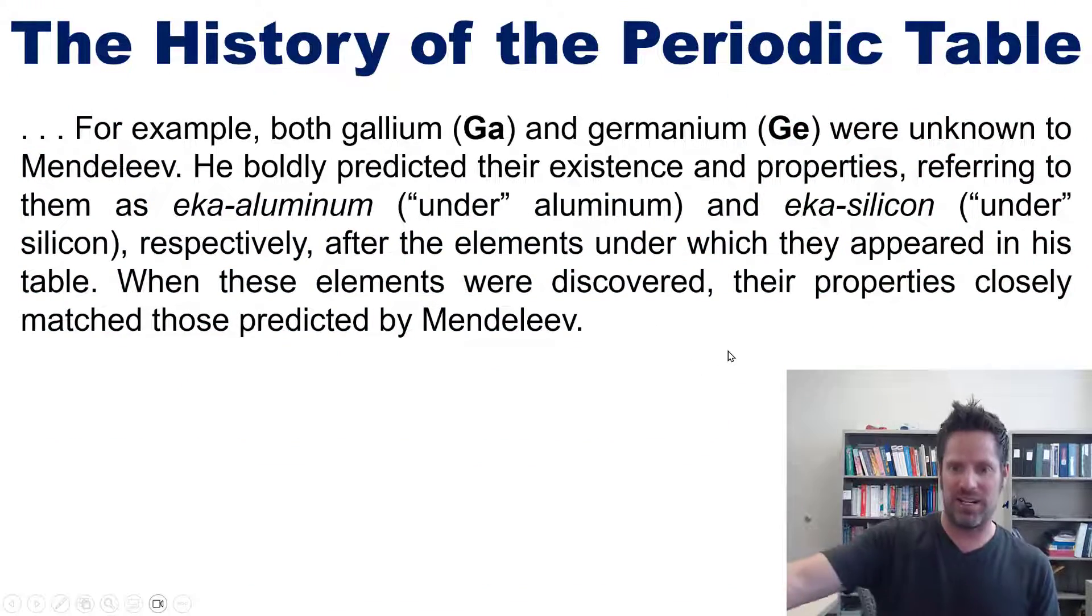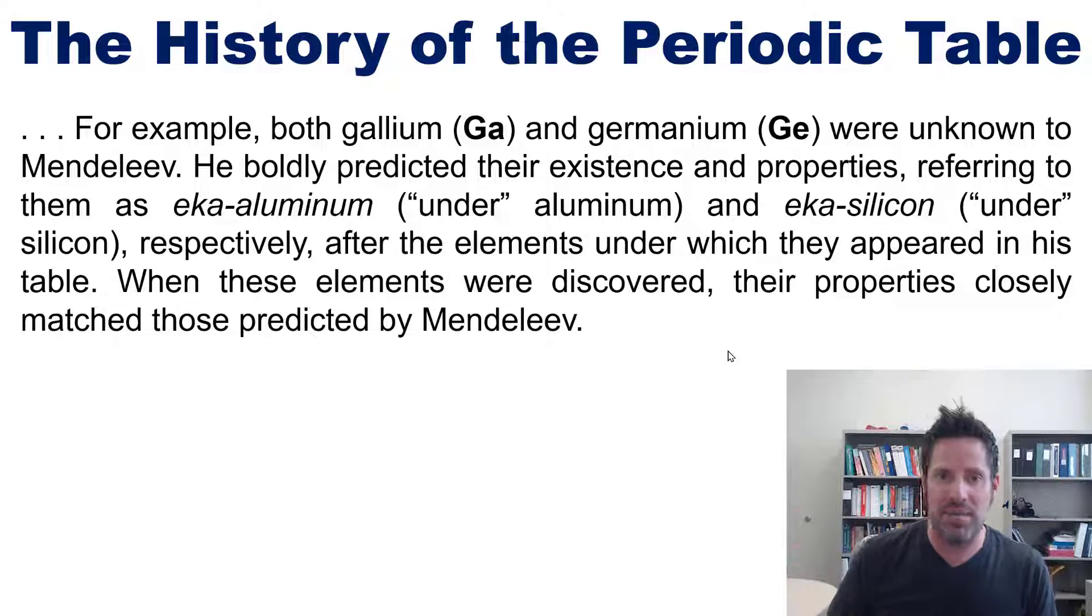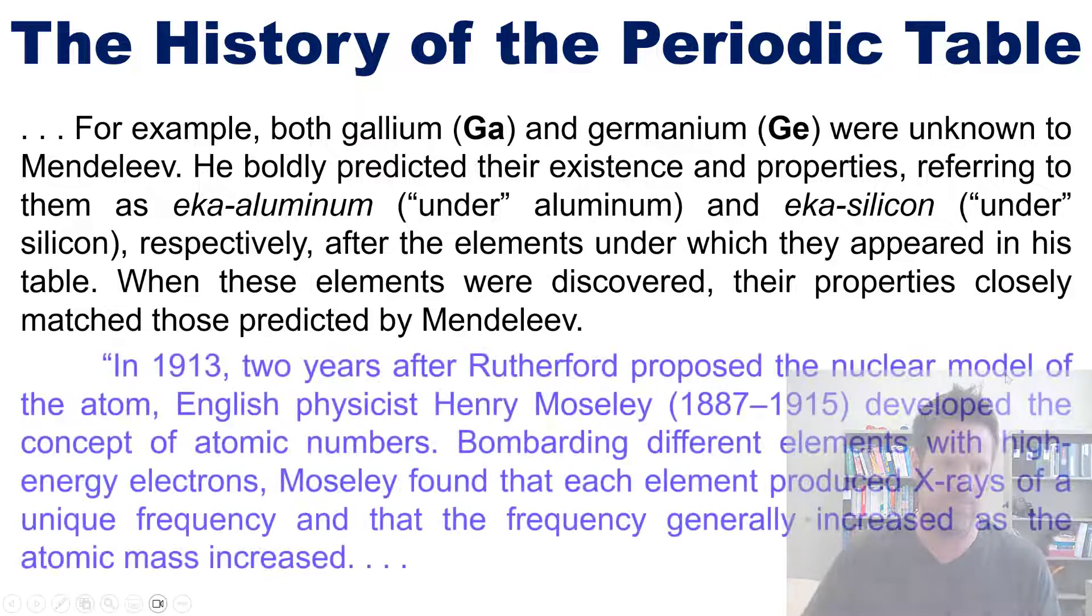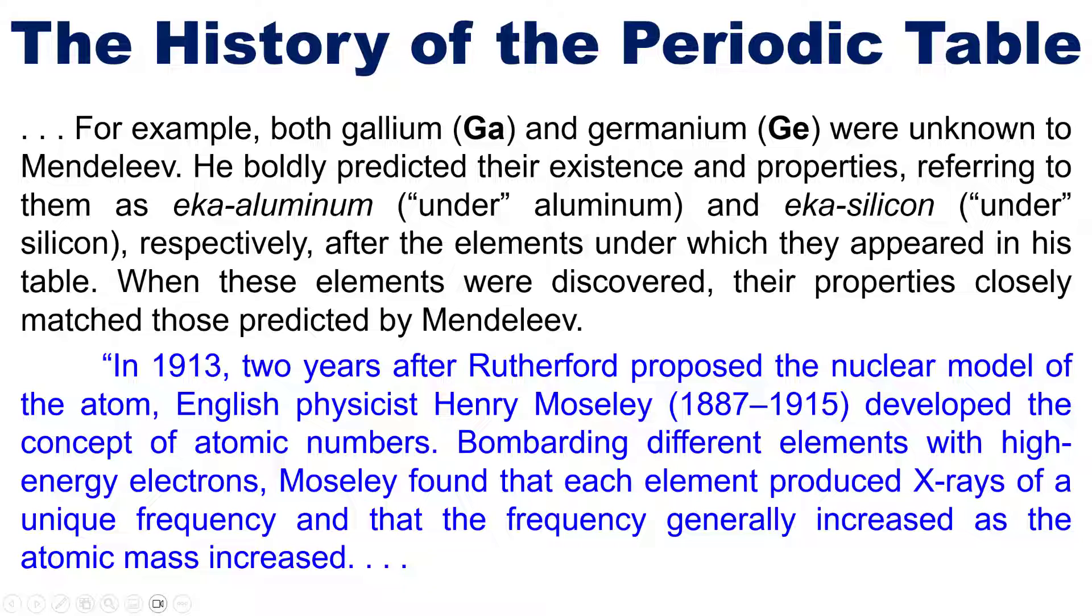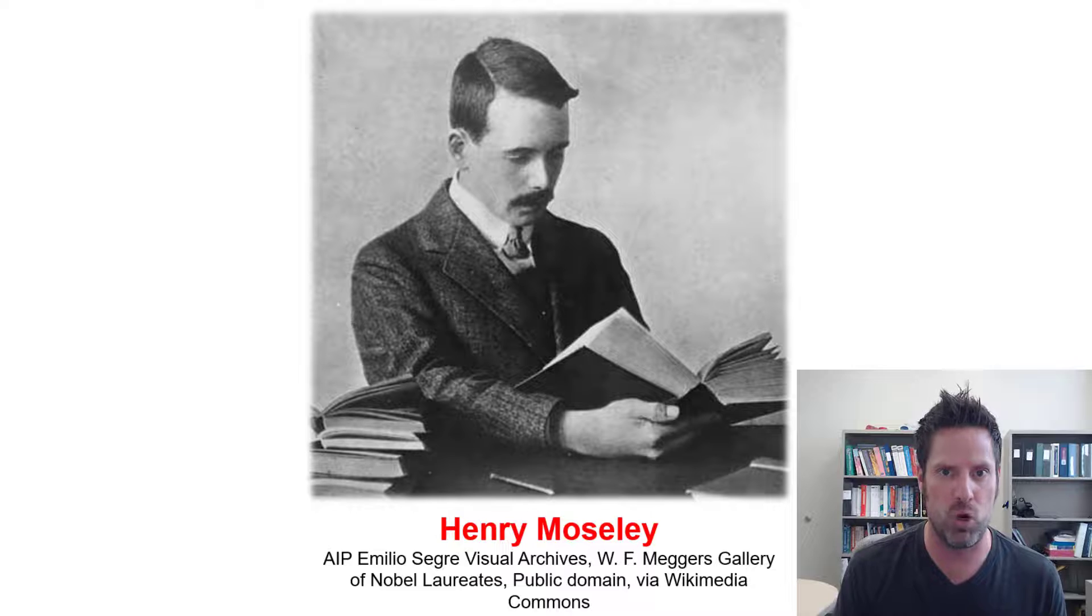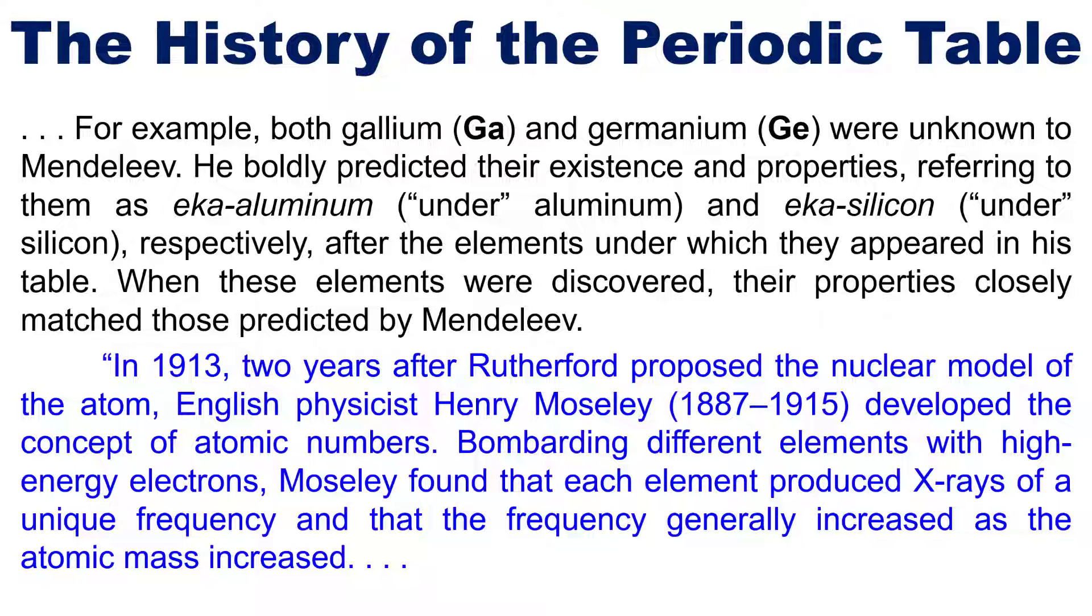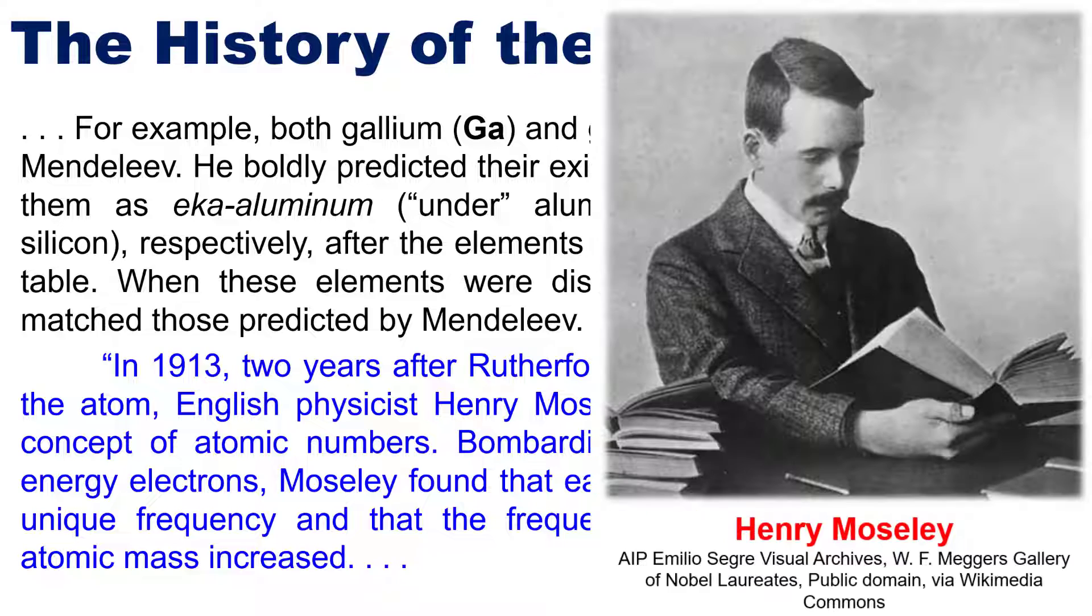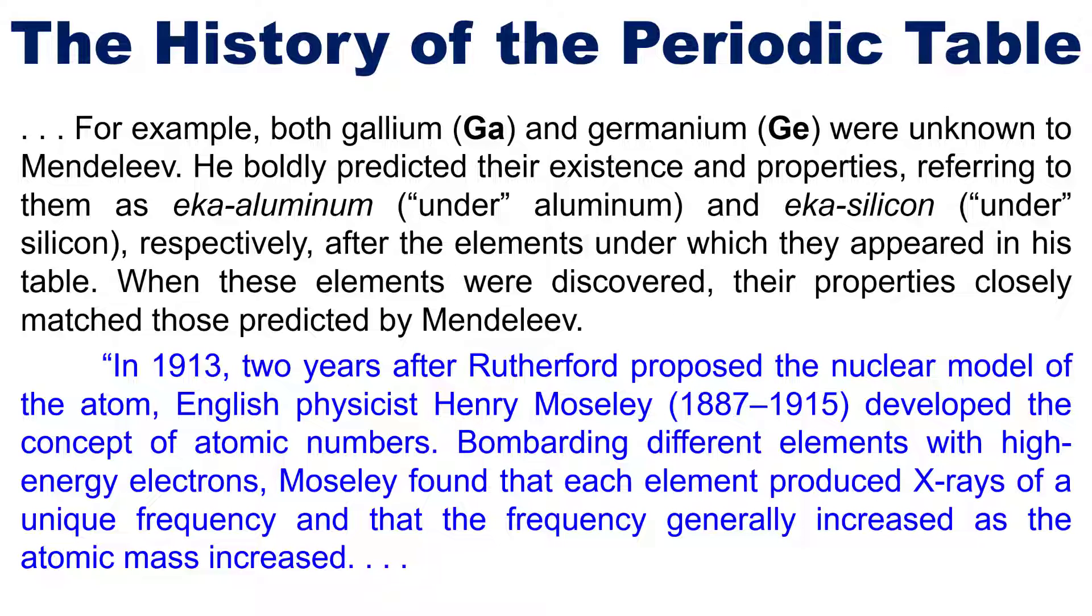In 1913, two years after Rutherford proposed the nuclear model of the atom, English physicist Henry Moseley developed the concept of atomic numbers. Bombarding different elements with high-energy electrons, Moseley found that each element produced x-rays of a unique frequency, and that the frequency generally increased as the atomic mass increased.